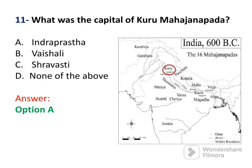The next question asks: what was the capital of Kuru Mahajanpad? Kuru had two capitals — Hastinapur and Indraprastha. The answer is option A, Indraprastha. You can also see the map for reference.